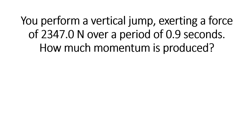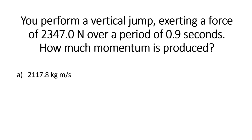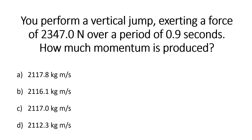You are performing a vertical jump and you exert 2,347 newtons of force over a duration of 0.9 seconds. How much momentum do you produce? Is it A. 2,117.8 kgm/s? B. 2,116.1 kgm/s? C. 2,117 kgm/s? Or D. 2,112.3 kgm/s? Get your calculators out and we will move on to our next question now.